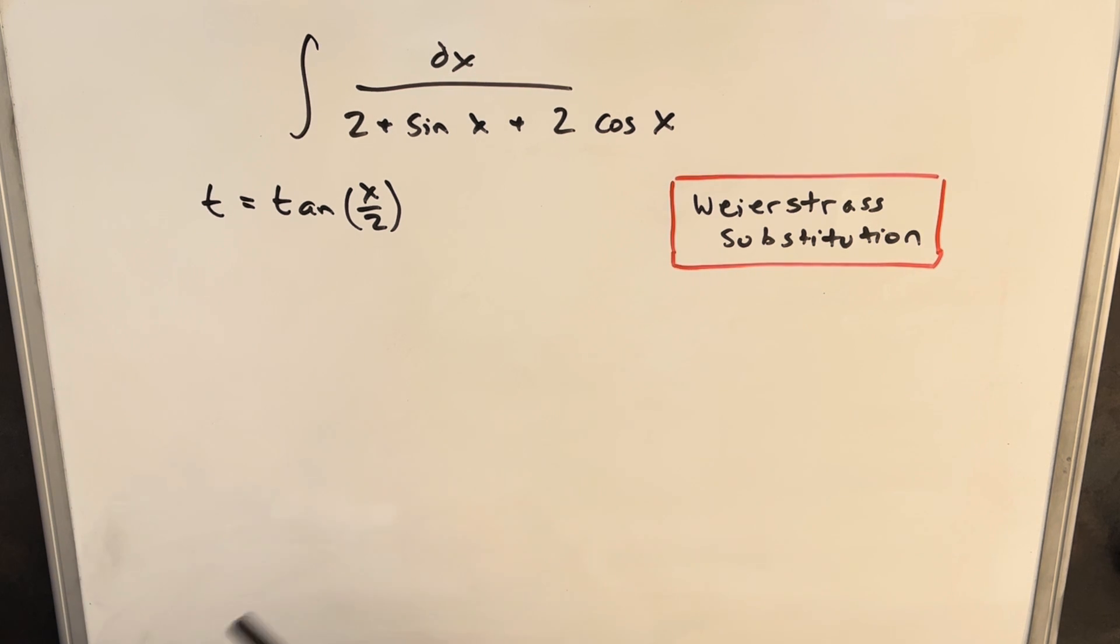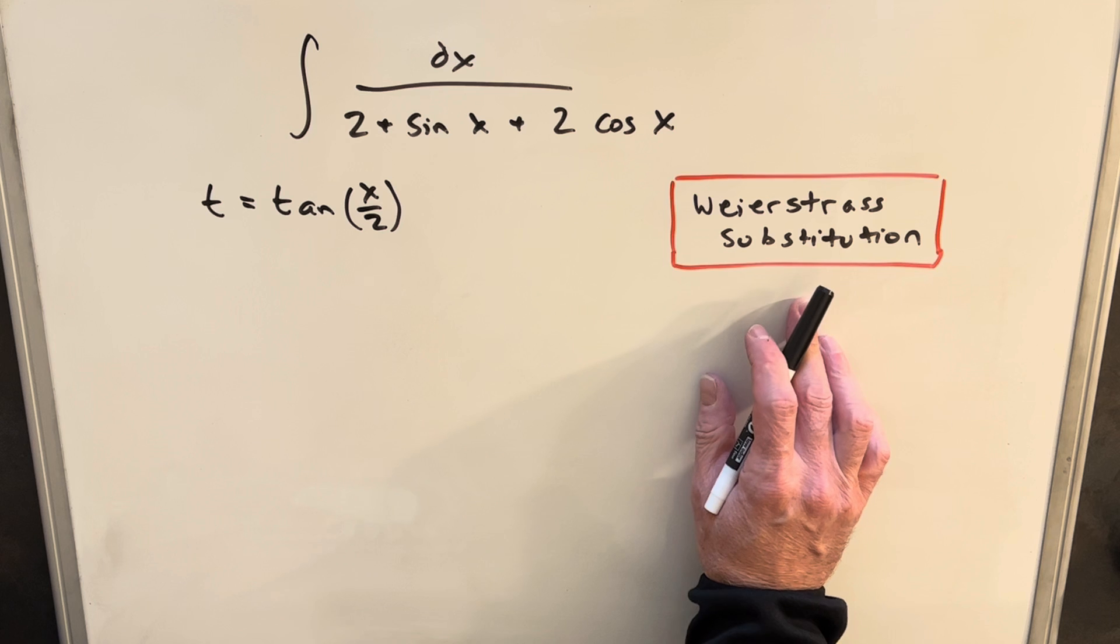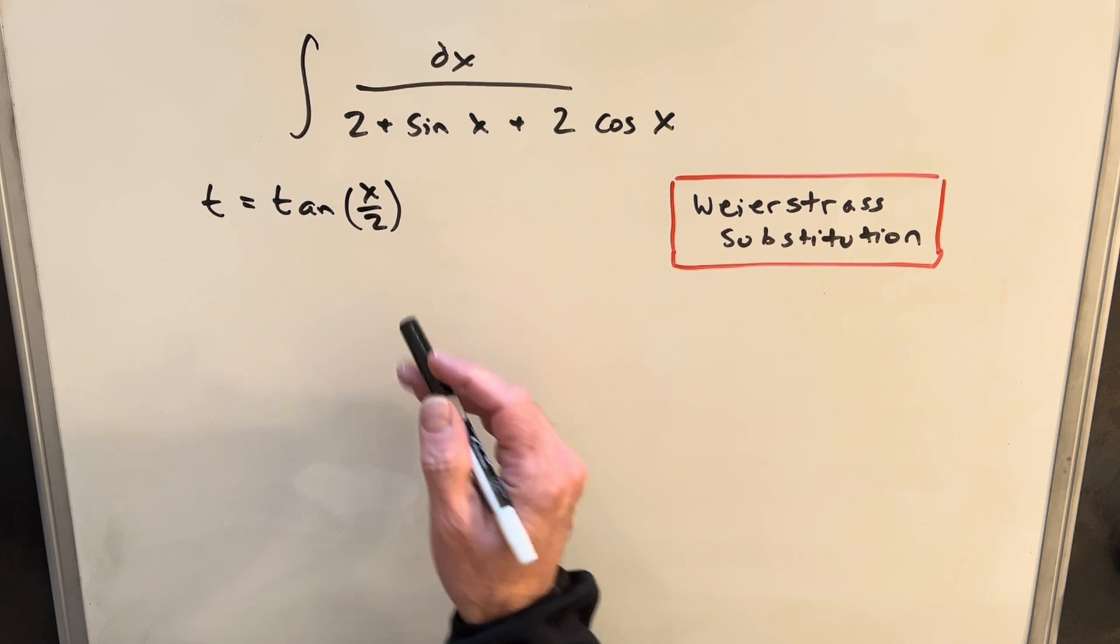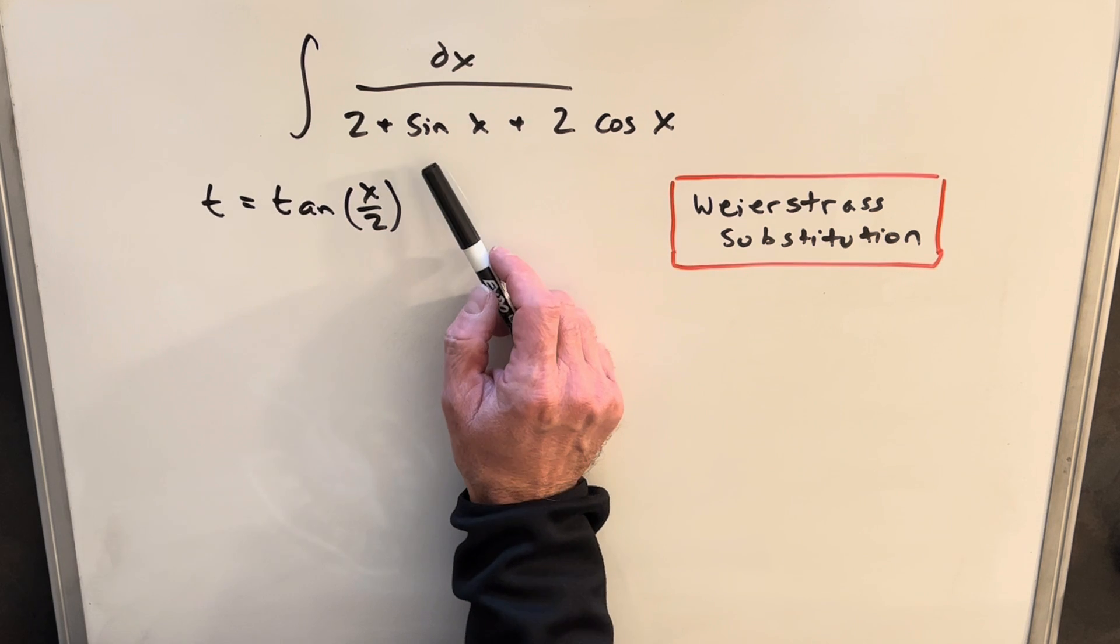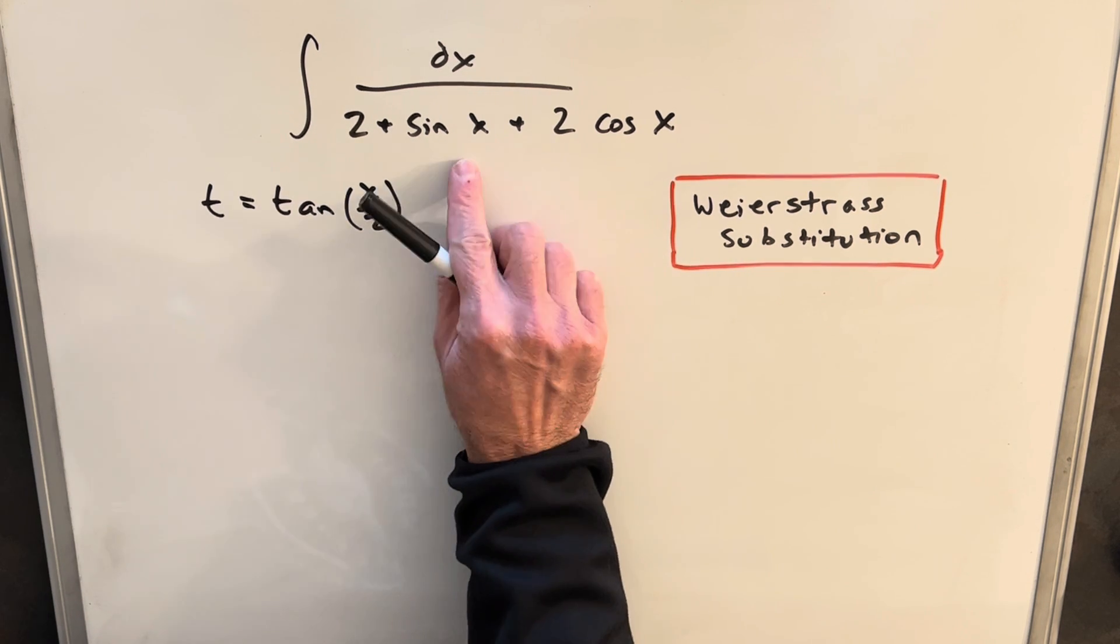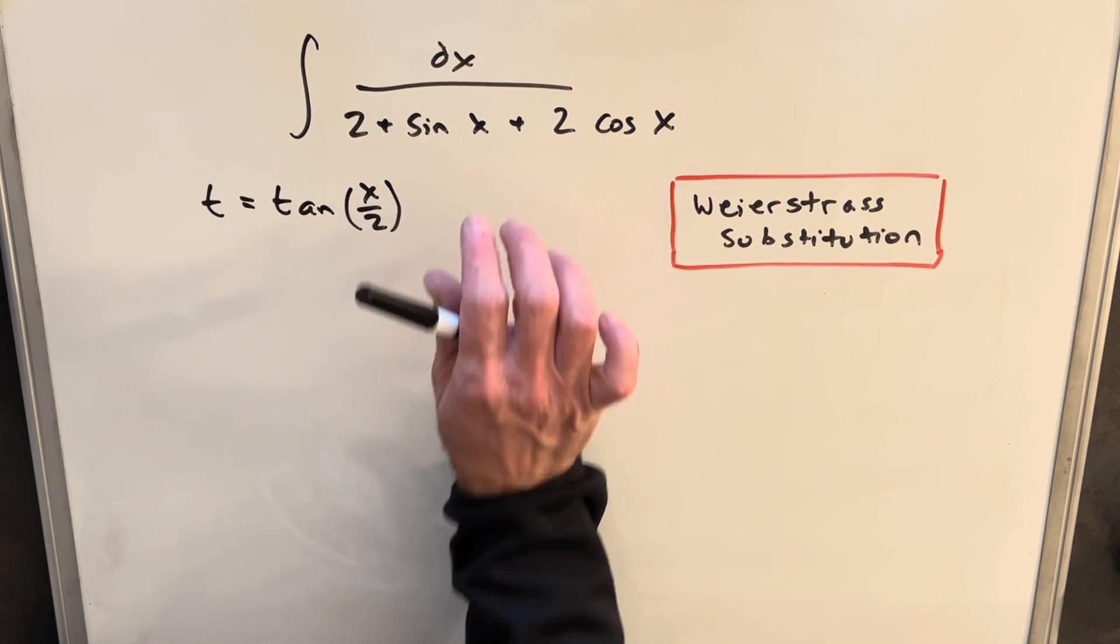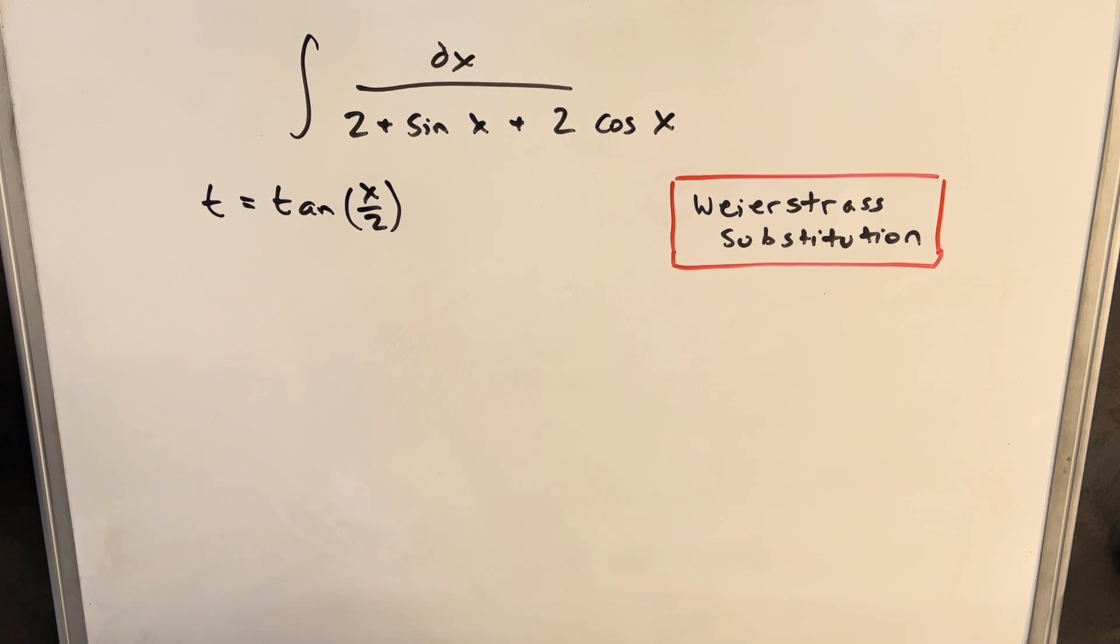This is known as a Weierstrass substitution. So this is when we do a half-angle substitution. We're typically using it in cases like this, where we have a trig integral where we're adding functions in the denominator. You could try to use it in other cases, but I find that it usually makes the problem harder. It's only these kind of specific cases where it really helps us.